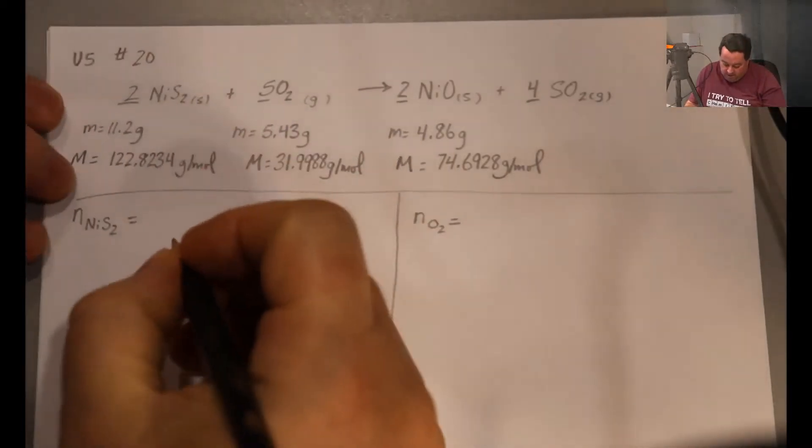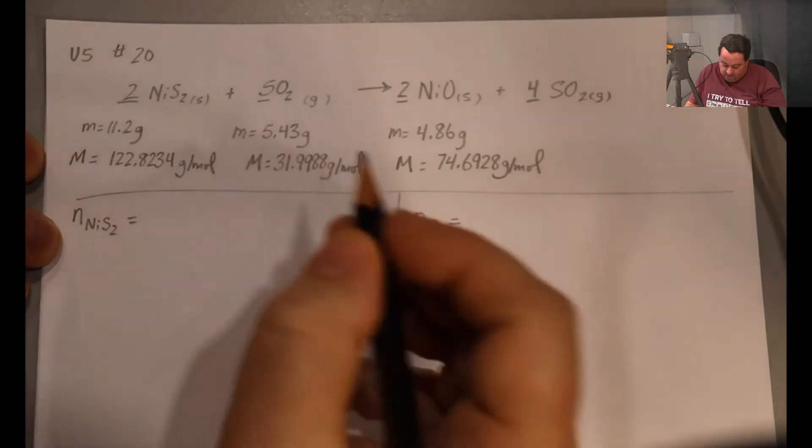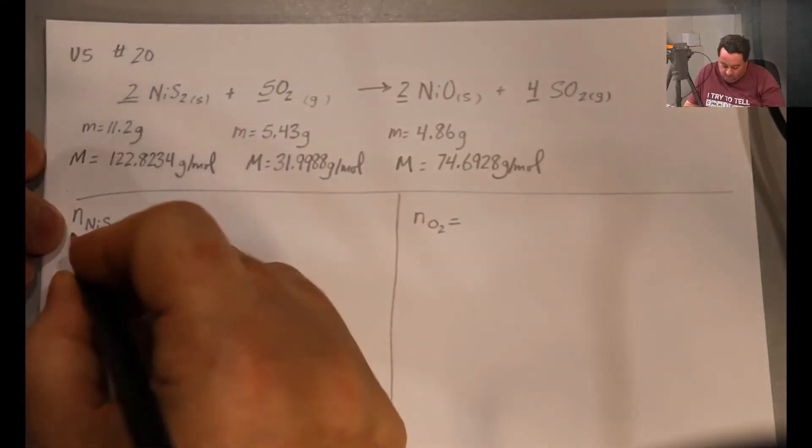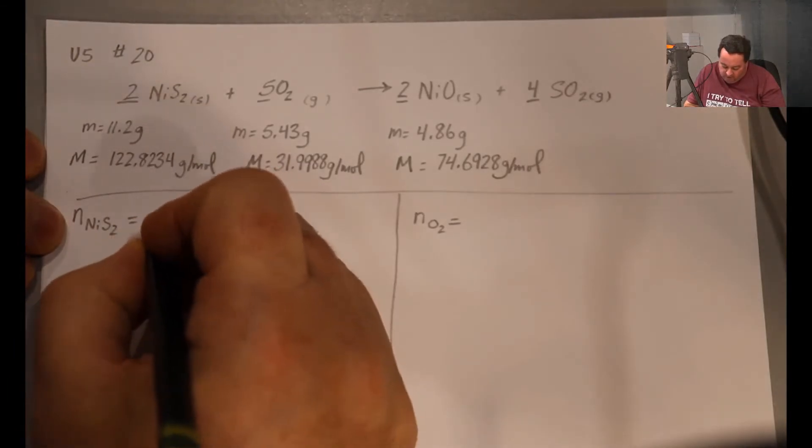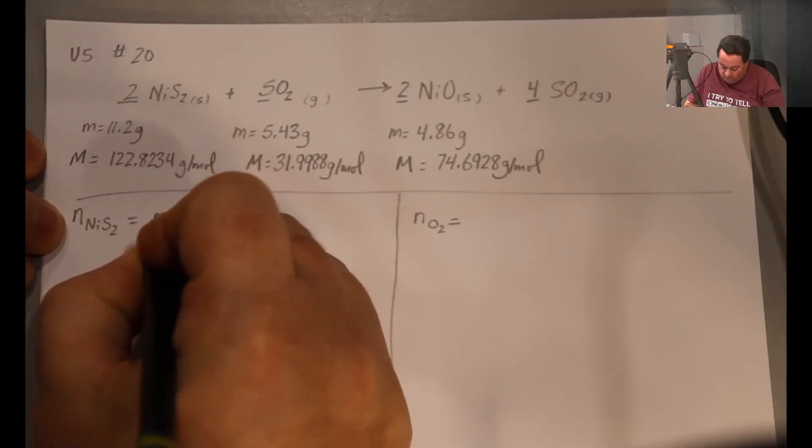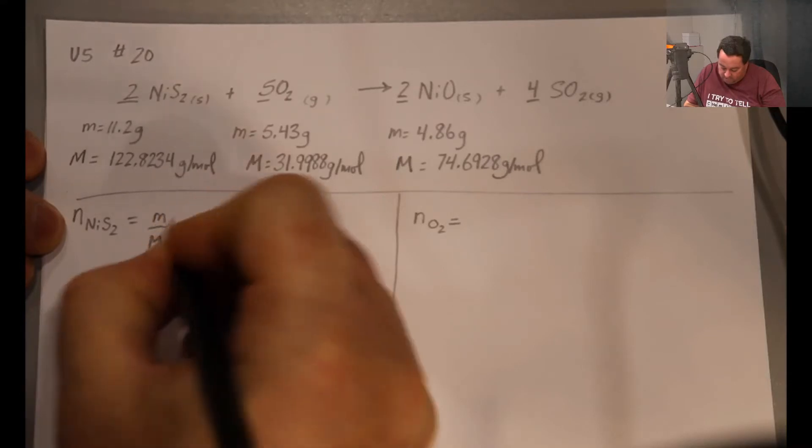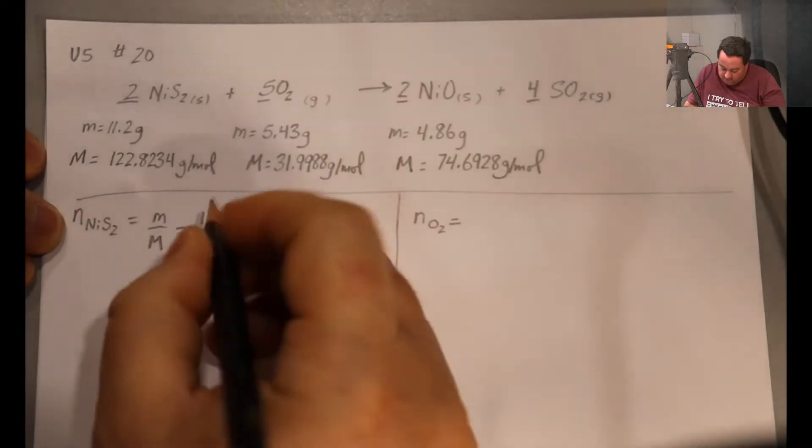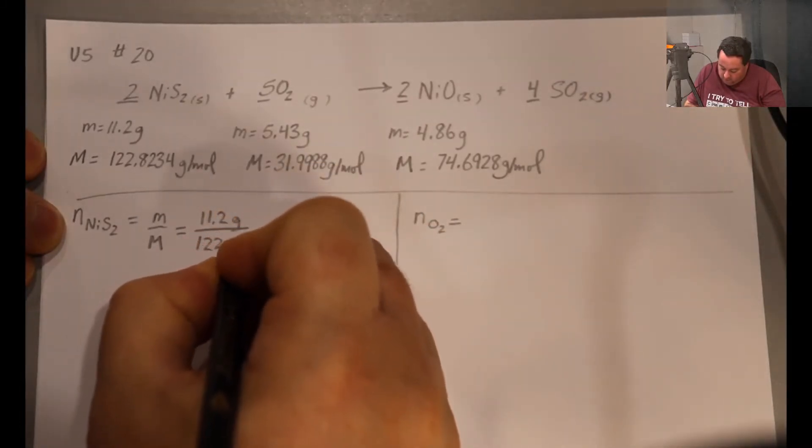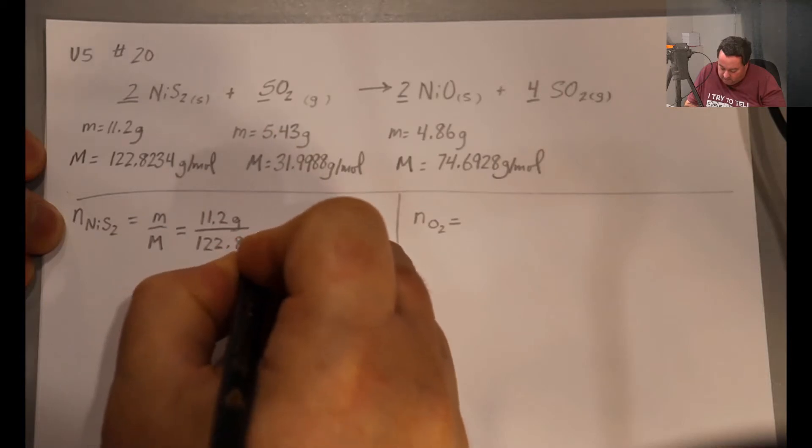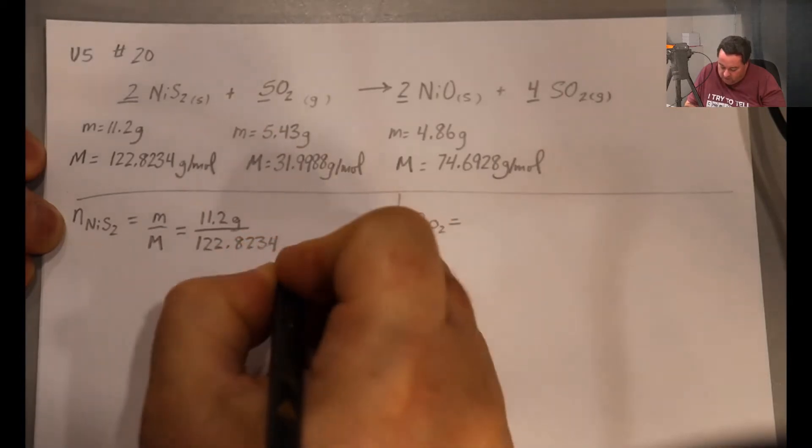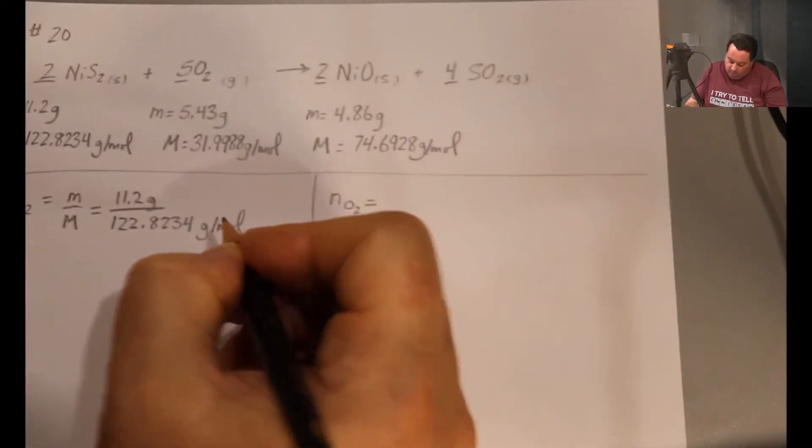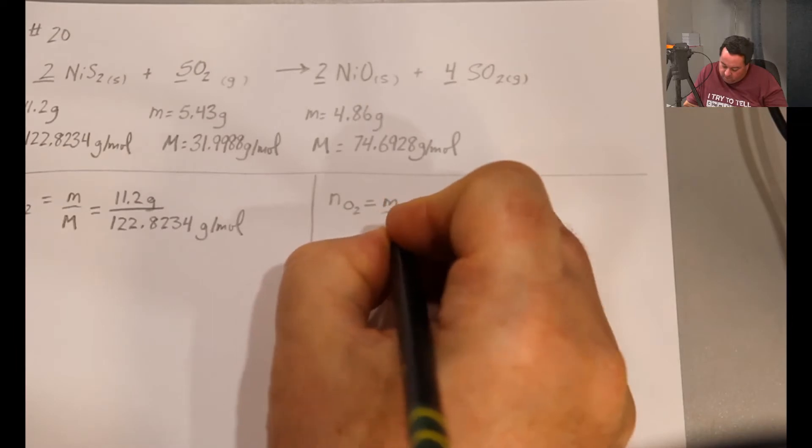Now my first step is going to be to calculate the number of moles of each of the starting materials. So the number of moles of nickel-four-sulfide will be mass over molar mass: 11.2 grams divided by 122.8234 grams per mole. And the number of moles of oxygen, similarly, mass over molar mass.